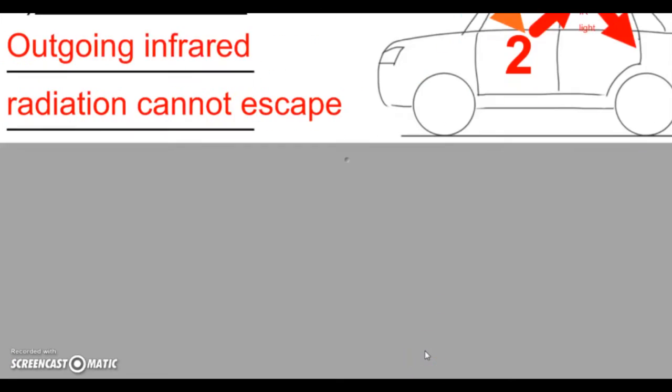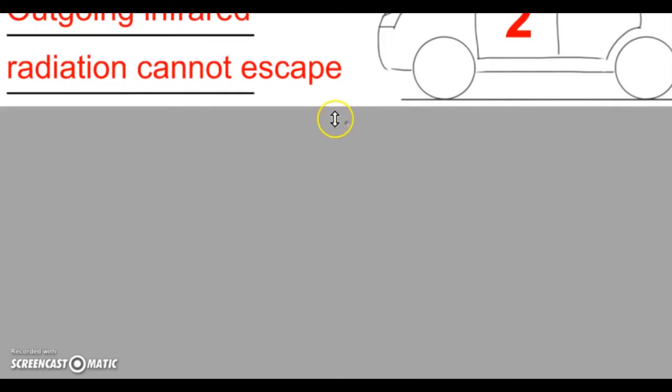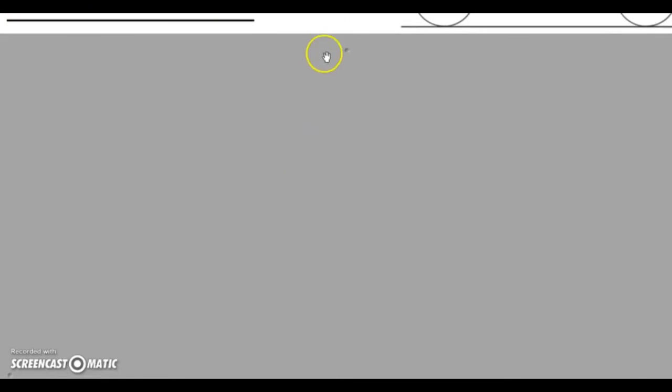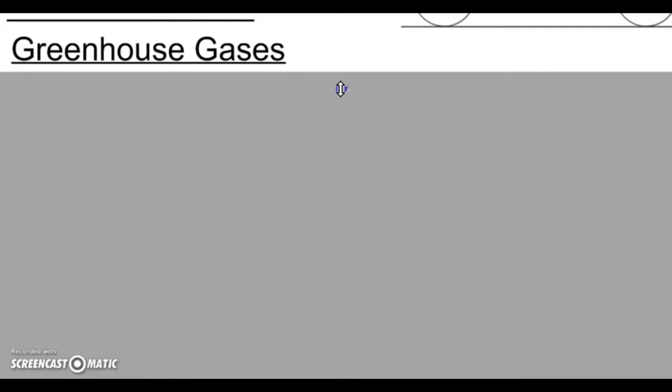So if the atmosphere has this thing called the greenhouse effect, the atmosphere obviously doesn't have a big glass covering over it. So there must be something in the atmosphere that acts like it, acts like that glass covering. All right, so the thing in the atmosphere that acts like the glass in a car is the greenhouse gases.